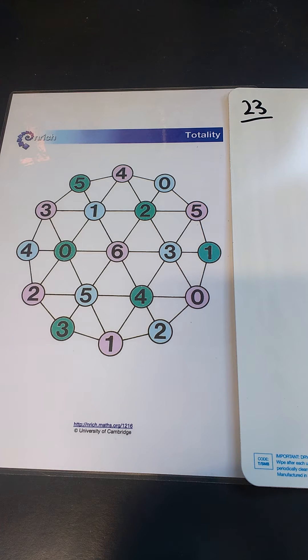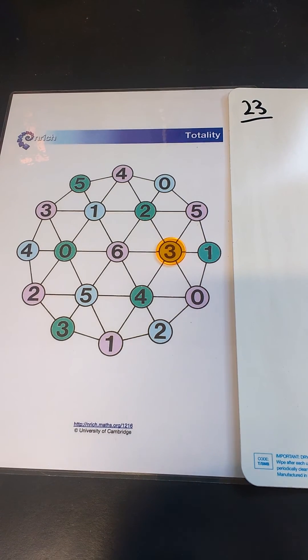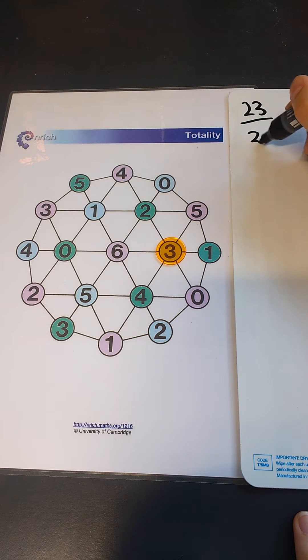So seeing as I chose the number, that means it's your go to start with. Okay, I think I'm going to start on a 3, so our total is now 3.